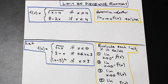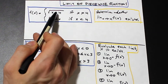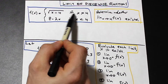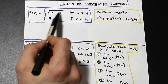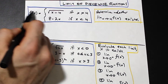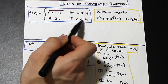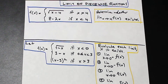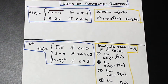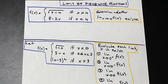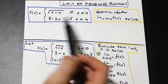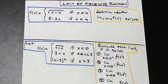A piecewise function is where we have a single function but it's defined as two separate functions on different intervals. So I'm assuming by this point that you know how to evaluate limits — I'm going to post a video on that down below. I'm going to skip some of the basics. Let's take a look at the first one and evaluate some different types of piecewise functions.